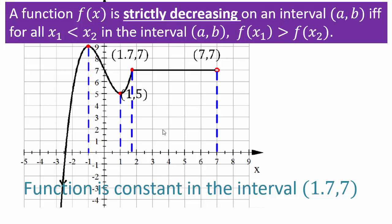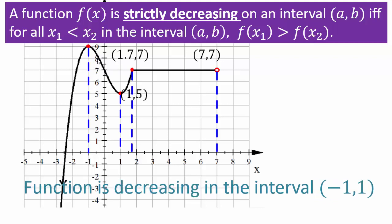The function is constant on the interval 1.7 to 7 — notice we're not including the endpoints. A function is said to be strictly decreasing if, on an interval (a, b), for every x1 smaller than x2, the y-coordinate at x1 is bigger than the y-coordinate at x2. For example, comparing x equals 0 to x equals 0.5, the y-coordinate at x equals 0 is higher than at x equals 0.5. That happens for all x values in this region, so the function is decreasing on the interval negative 1 to 1.